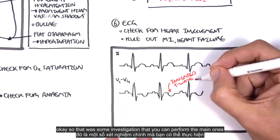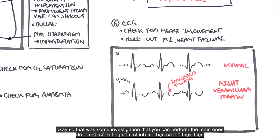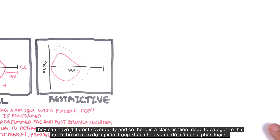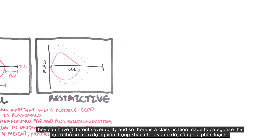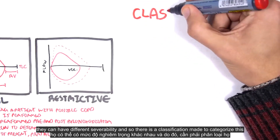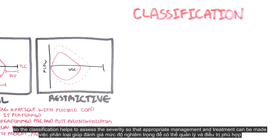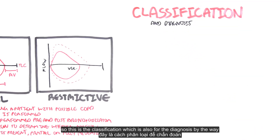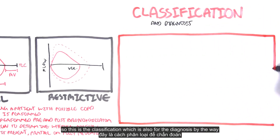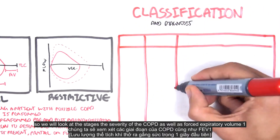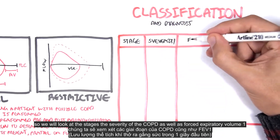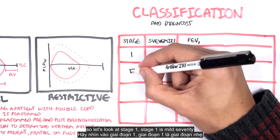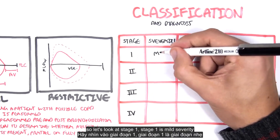Now, people can have different severities of chronic obstructive pulmonary disease, and so there is a classification made to categorize this. The classification helps assess the severity so that appropriate management and treatment can be made. We will look at the stages of severity of COPD as well as the forced expiratory volume. Stage one is mild severity.